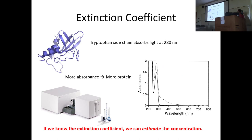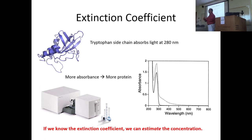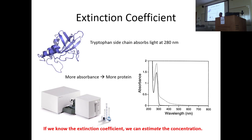Extinction coefficient is really important. If I have a protein like staphylococcal nuclease, the tryptophan side chain tends to absorb light at 280 nanometers. More tryptophan — either more in the sequence or more in the sense of higher protein concentration — means more absorbance at 280 nanometers. This is a UV-Vis spectrophotometer. You put your protein in a little cuvette, it shines light from one box to the other, and gives you a spectrum of how much light is absorbed as a function of wavelength.